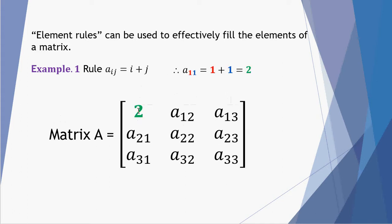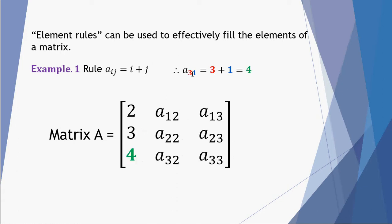The first element has row 1 column 1. Following this rule it's I = 1 plus J = 1, so 1 plus 1 gives me 2. The second element A 2 1 — second row, first column — row number I is 2 plus column number J is 1, so 2 plus 1 gives me 3. A 3 1 following this rule: I is 3 and J is 1, so 3 plus 1 is 4.